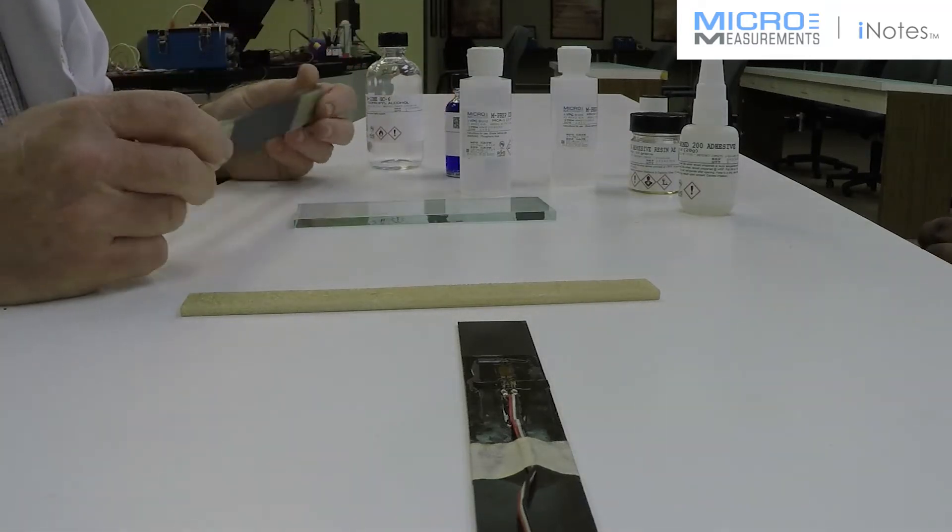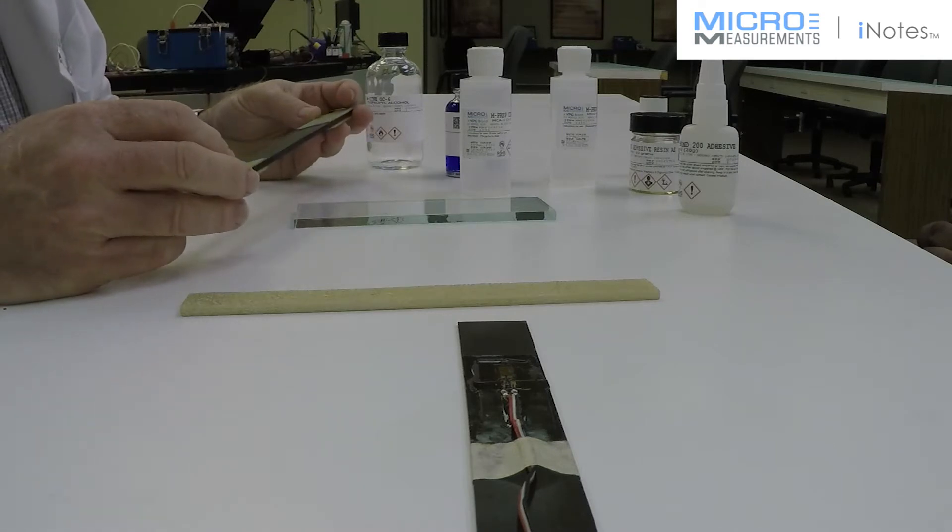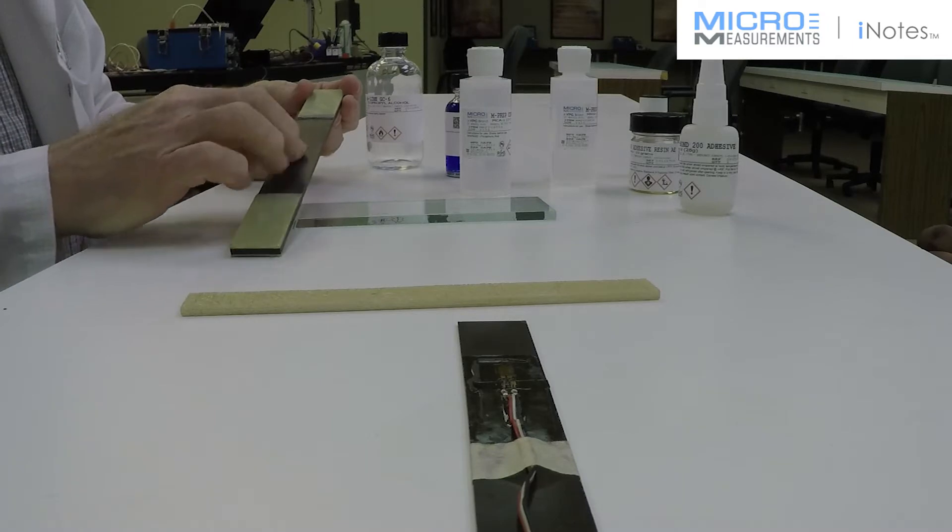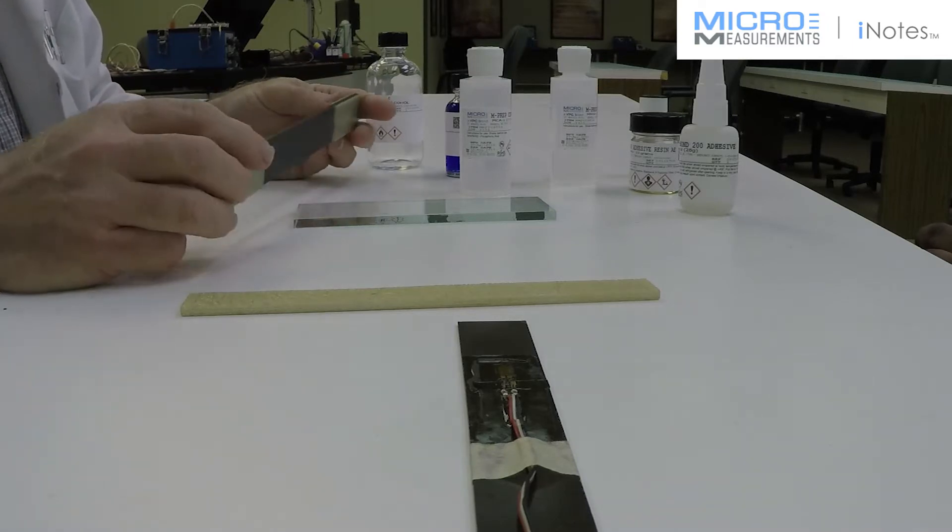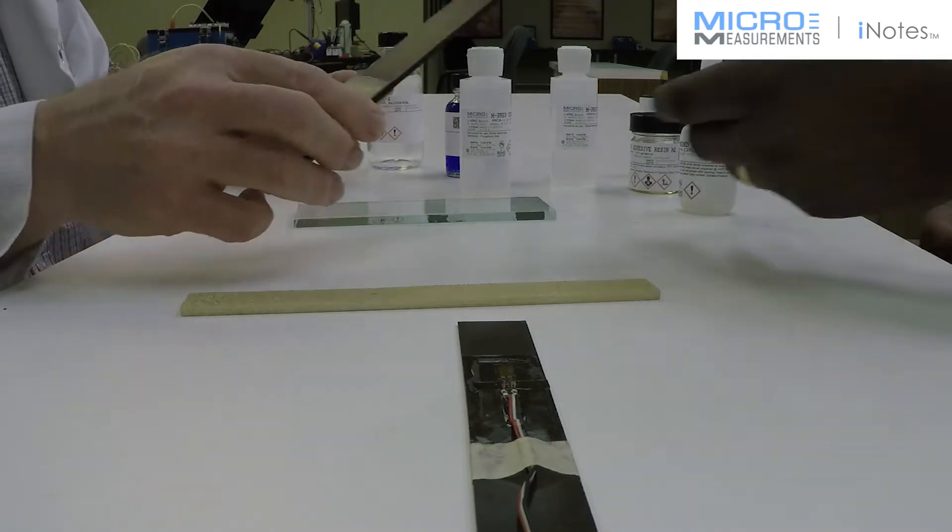Hi, Donyell. I've got a customer who sent in a sample of a composite specimen and wanted to know a little bit about how to gauge it. It's got a rough surface and a smooth surface. What do you think the right adhesive would be for this? Thanks, Tom.